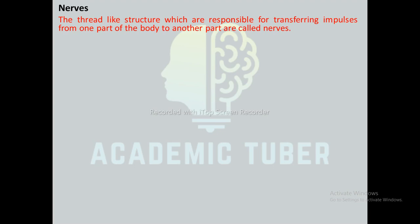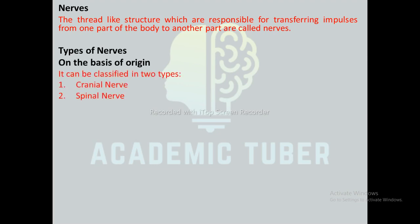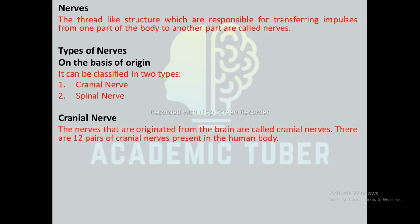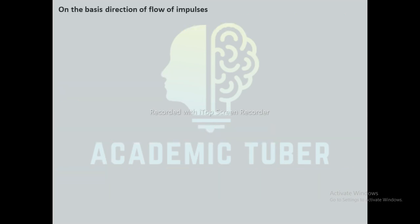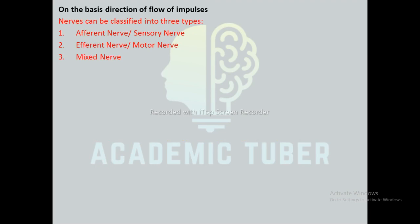Nerves are thread-like structures responsible for transmitting impulses from one part of the body to another. On the basis of origin, nerves can be classified into two types: cranial nerves, which originate from the brain — there are 12 pairs of cranial nerves in the human body — and spinal nerves, which originate from the spinal cord — there are 31 pairs of spinal nerves in the human body.